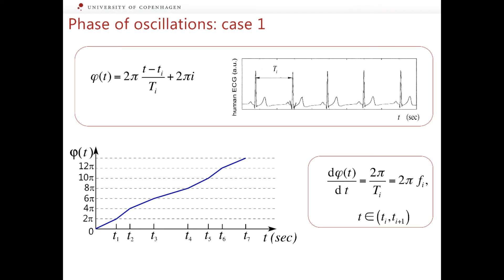Importantly, the derivative of the phase is inversely proportional to the instantaneous period capital T_i of oscillations and has the meaning of the instantaneous frequency f_i multiplied by 2π.